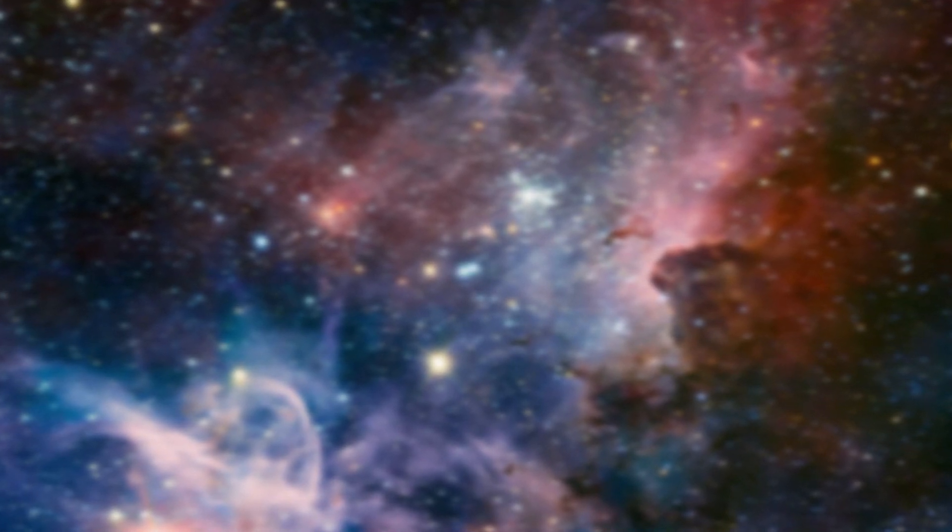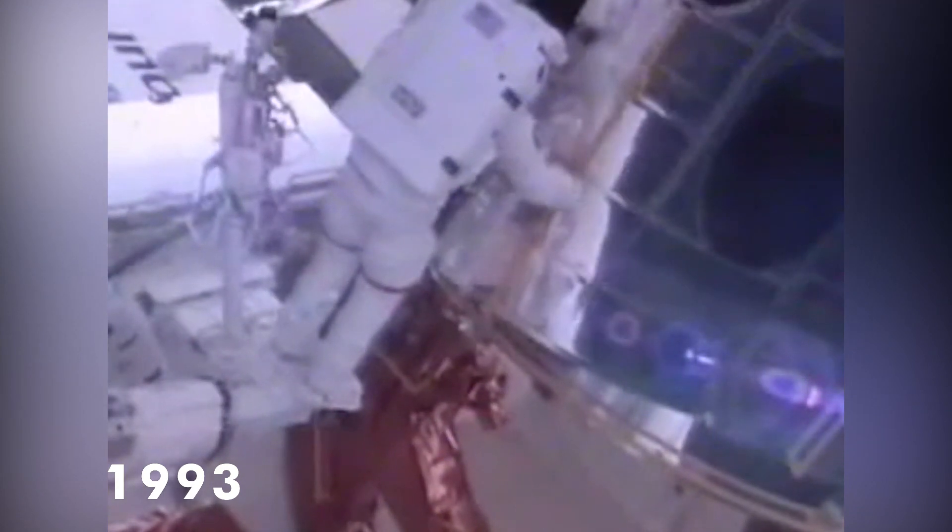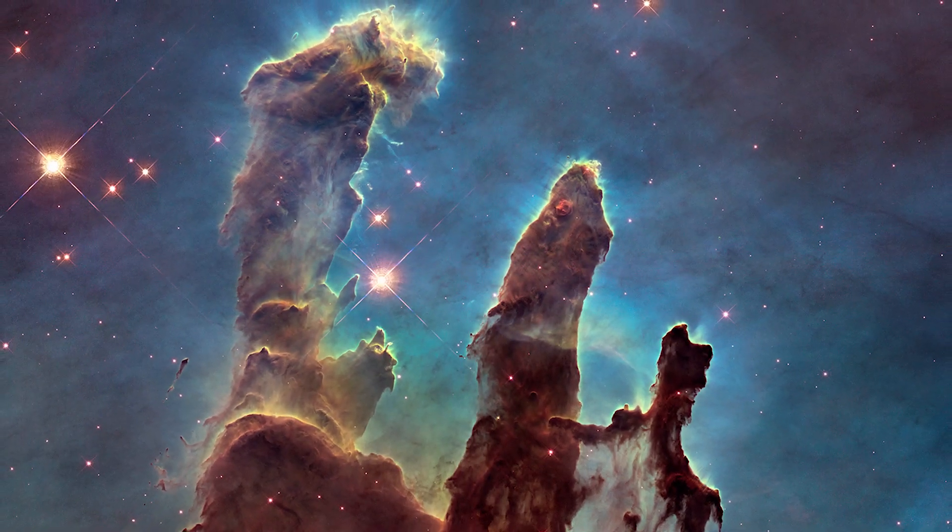A NASA service mission was sent in 1993 to fix Hubble with a new camera, and it's been sending back beautiful images ever since.